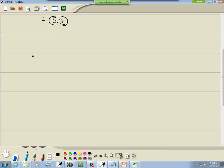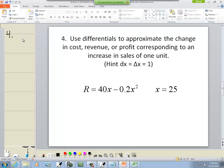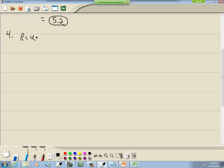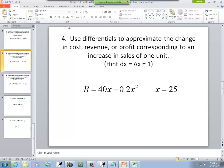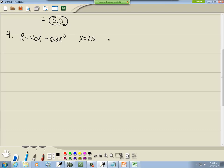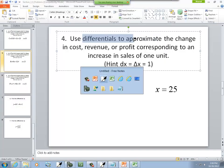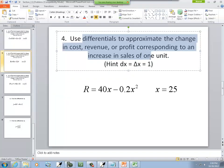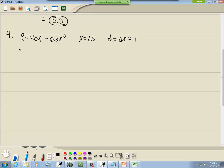Let's take a look at the next one, this one's a revenue one. So we've got R is equal to 40x minus 0.2x squared, x is 25, and dx equals delta x which equals 1 because they're asking about the increase in sales of 1 unit. So if it's 2 units then we'd have 2 here. Well if I do dR dx, the derivative of that is 40 minus, put your power out in front, lower by 1.